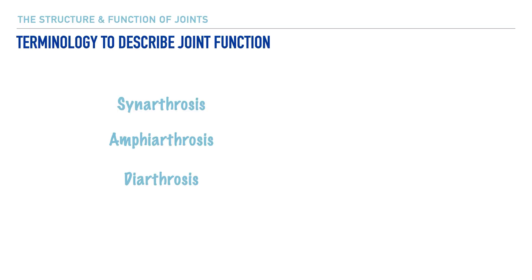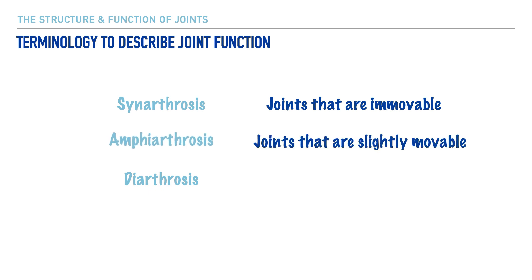We'll start by discussing the terminology used to describe joint function. First, we have the term synarthrosis, which refers to joints that are immovable. Second, we have the term amphiarthrosis, which refers to joints that are slightly movable. And thirdly, we have the term diarthrosis, which refers to joints that are freely movable.